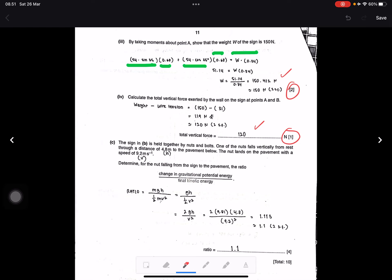Question C: A nut falls vertically from rest through a distance of 4.8 meters to the pavement below. The nut lands on the pavement with speed 9.2 meters per second. Determine the ratio of change in gravitational potential energy to final kinetic energy. mgh divided by half mv squared, or gh divided by half v squared, or 2gh divided by v squared. This gives 9.81 times 4.8 times 2 divided by 9.2 squared, which equals 1.1. This is correct in two significant figures.